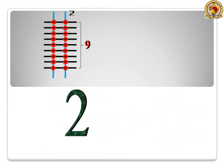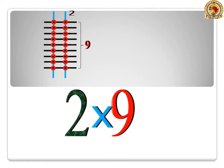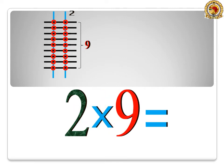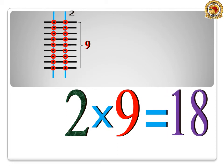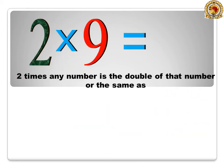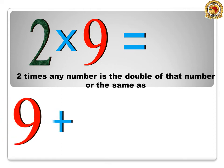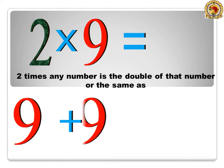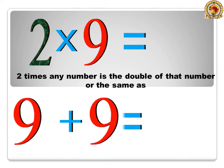2 times 9 is equal to 18. 2 times any number is the double of that number, or the same as 9 plus 9 is equal to 18.